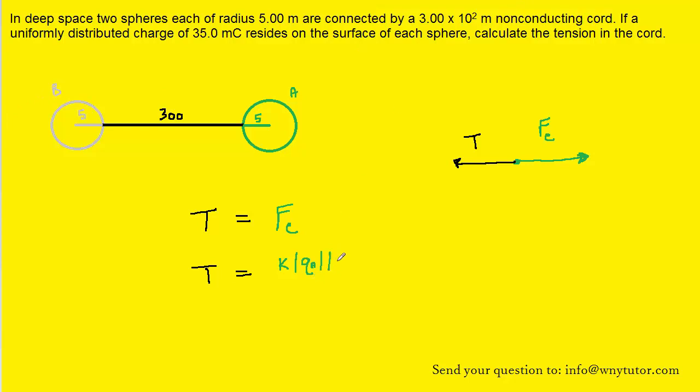Multiplied by the magnitude of the other charge that's in the vicinity, so that would be charge B. And then divided by the distance that separates those two charged objects.